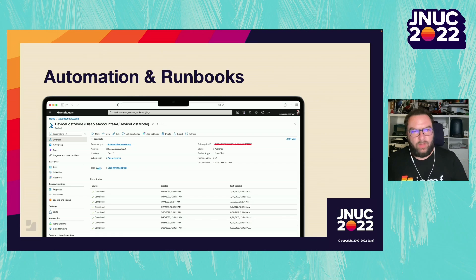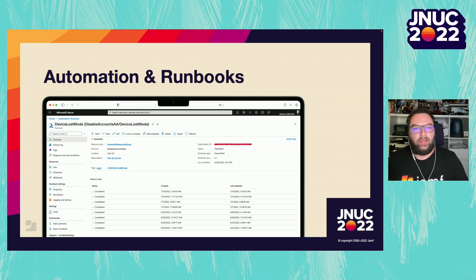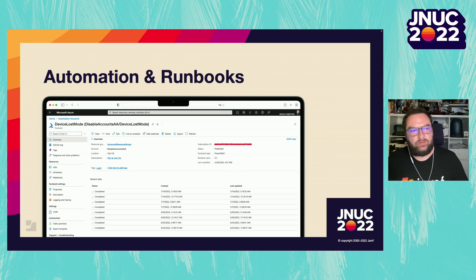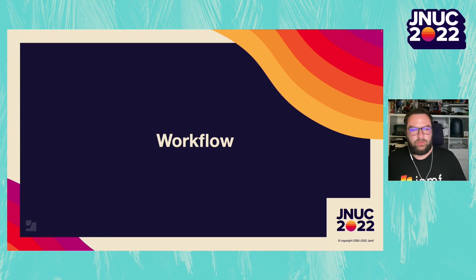Finally, we need to create a runbook to execute a script that will use the Jamf Pro Classic API to lock the devices. This script will use the UPN extracted from the alert rules. With that information, it will first connect to the Jamf Pro Classic API using the specific API user we created. It will go to the user's endpoint of the Jamf Pro Classic API, and if that user is known to Jamf Pro, we will see which devices are associated with that user in the inventory. Once we have this, we extract the Jamf ID of each device and send them an MDM lock command using either the mobile device commands or the command endpoint for the Mac. The runbook is run by an automation account, and we will also integrate with Azure Key Vault to protect the credentials of the Jamf Pro user.